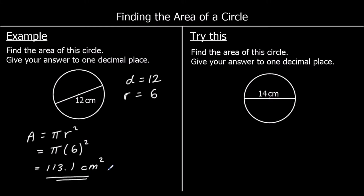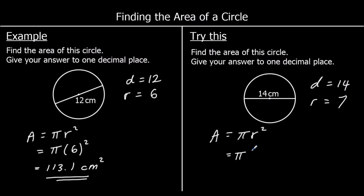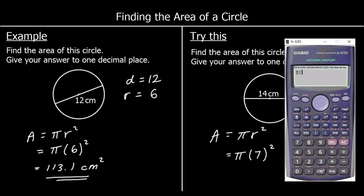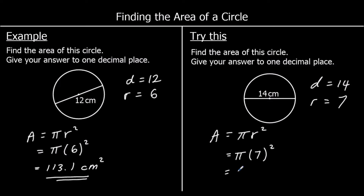One for you to try — give this one a go. We've been given the diameter: a diameter of 14. The radius is half of the diameter, so half of 14 is 7. The area of a circle is pi times the radius squared. The radius is 7, so it's pi times 7 squared, which we can type into the calculator. We get 49 pi, or 153.9 centimetres squared.